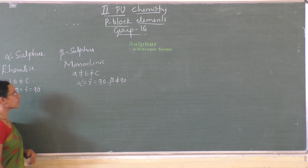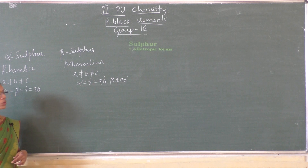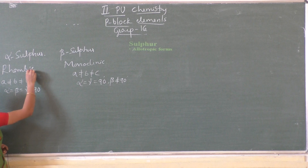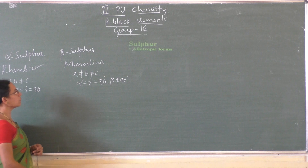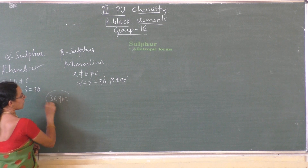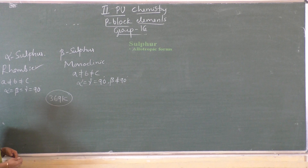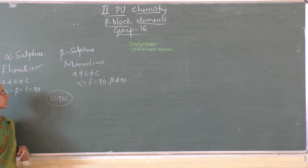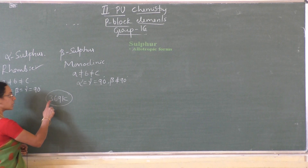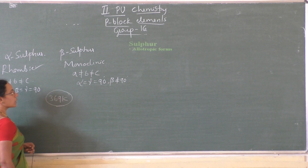Sulfur exists in two forms: yellow rhombic or alpha sulfur, and beta sulfur or monoclinic sulfur. At room temperature, only rhombic sulfur is more stable. 369 K is called the transition temperature because below 369 K alpha sulfur is the more stable form, and above 369 K beta sulfur is the most stable allotropic form. At 369 K both forms are stable, hence this temperature is called the transition temperature.